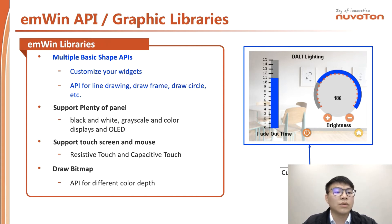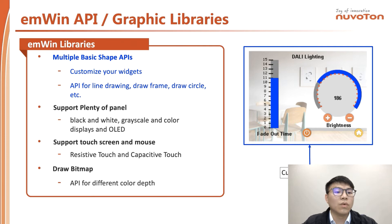EN-Wing supports black, white, gray scale, and color display, and OLED. EN-Wing also supports resistive touch and capacitive touch. We also can use the API to display different colors for the same picture.